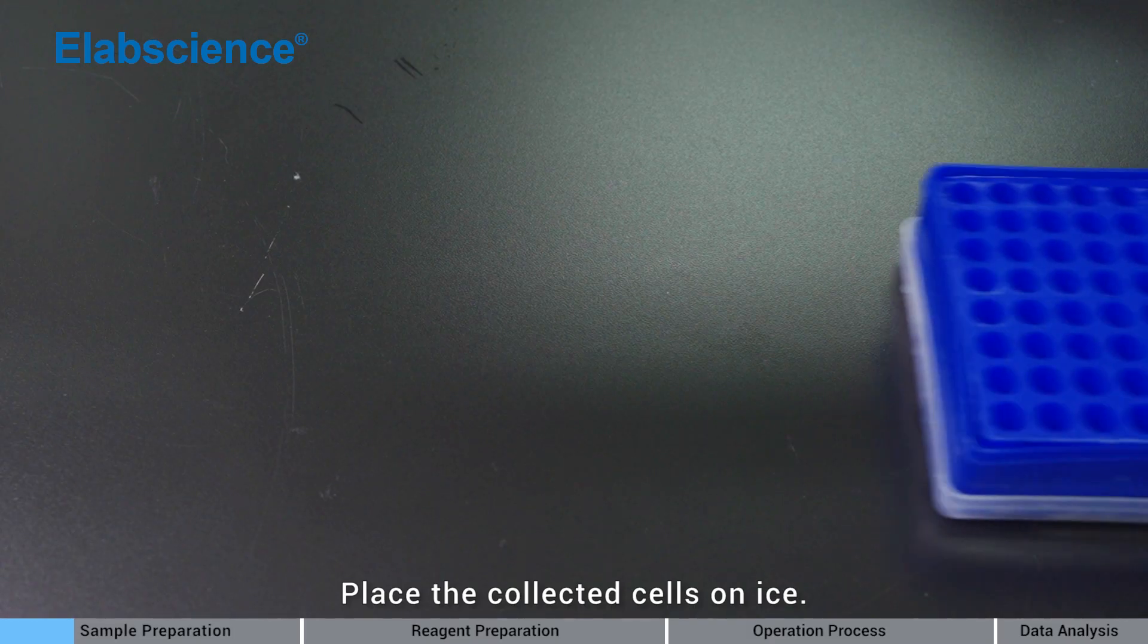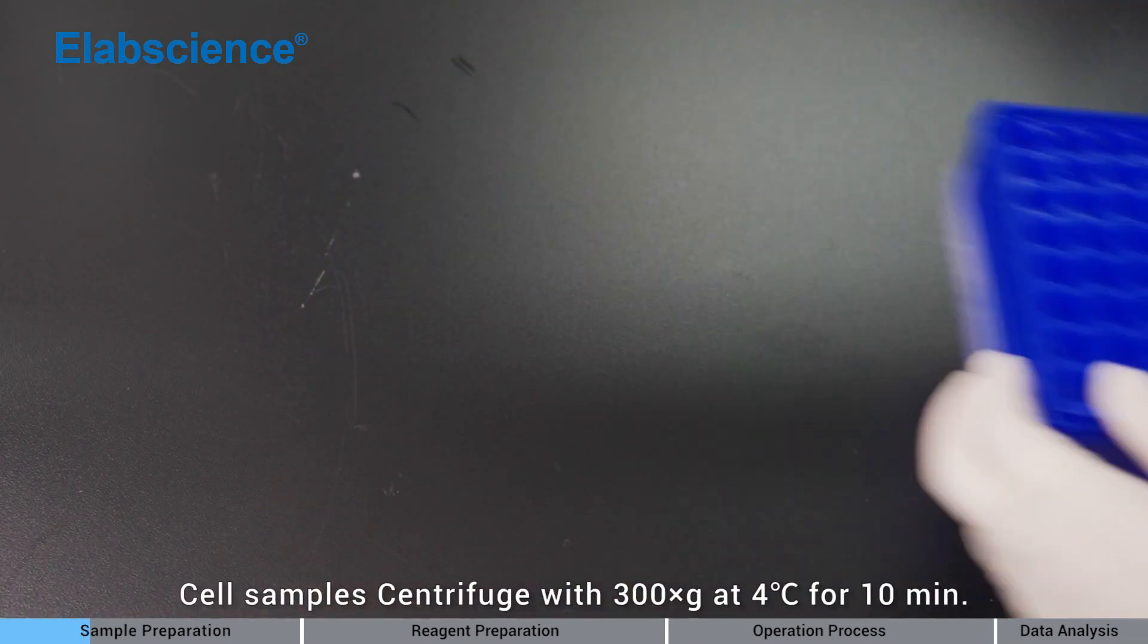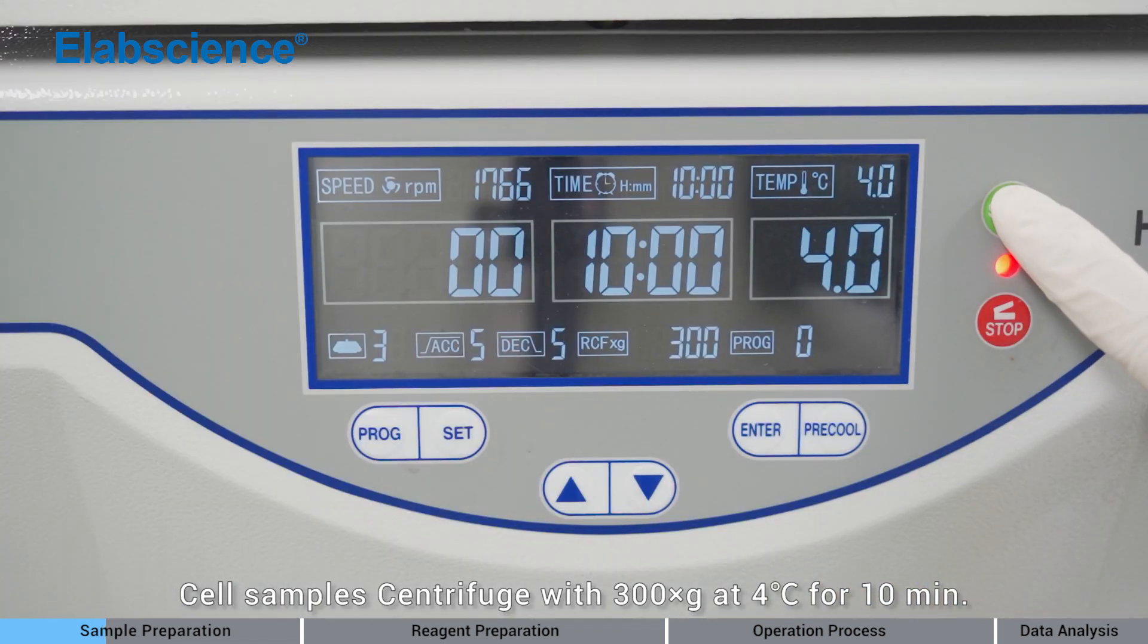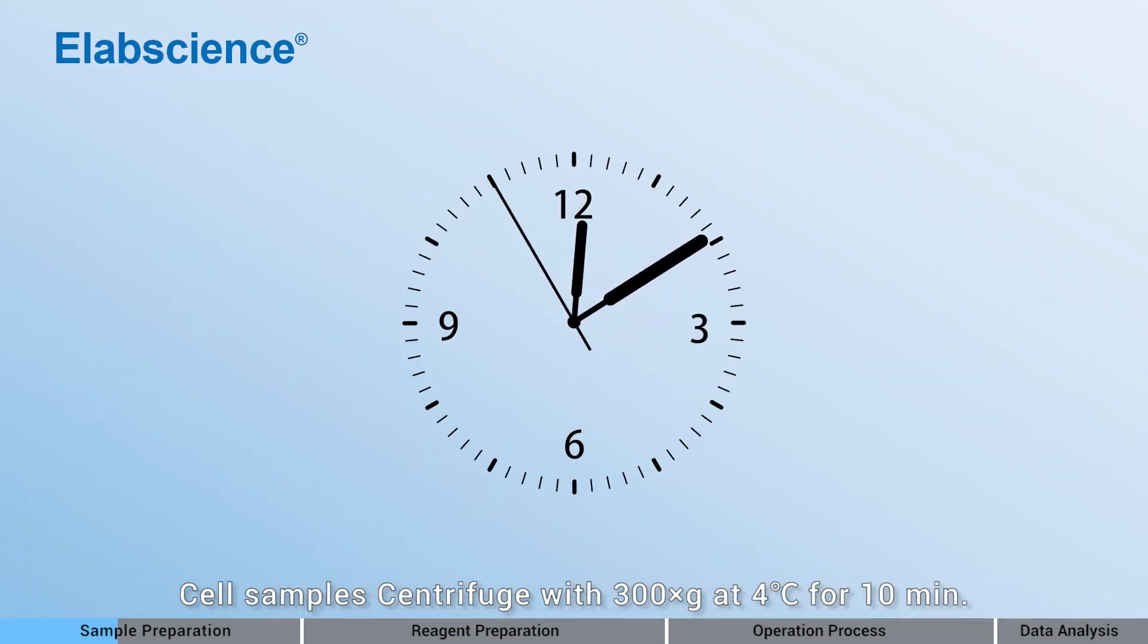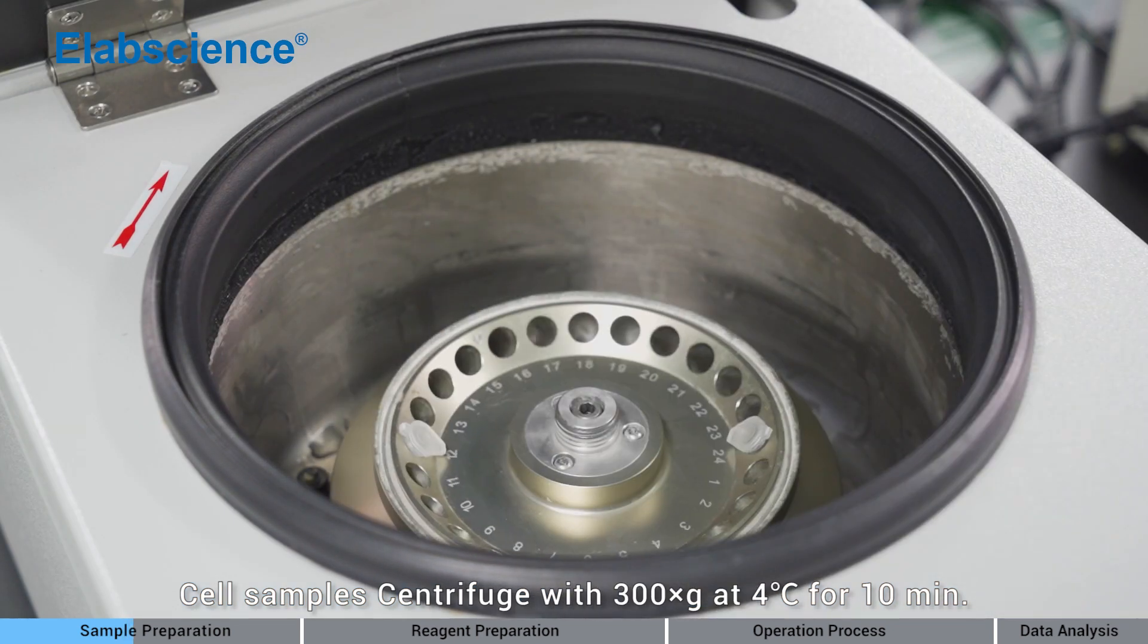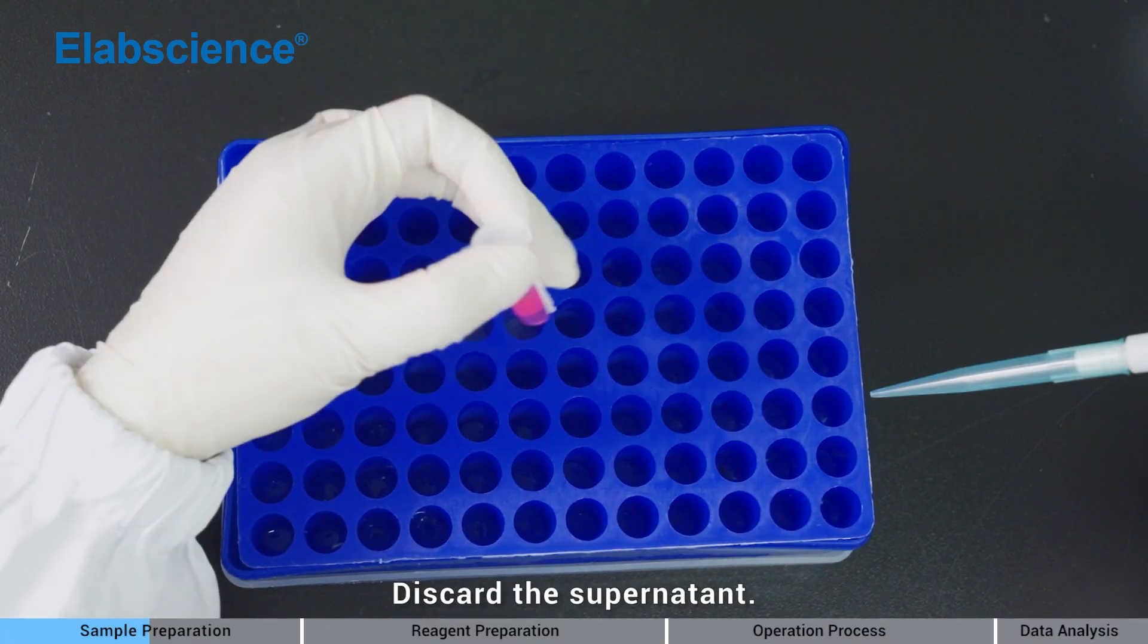Sample preparation: Place the collected sample to analyze. Centrifuge cell samples with 300 times gravity at 4 degrees for 10 minutes. Discard the supernatant.